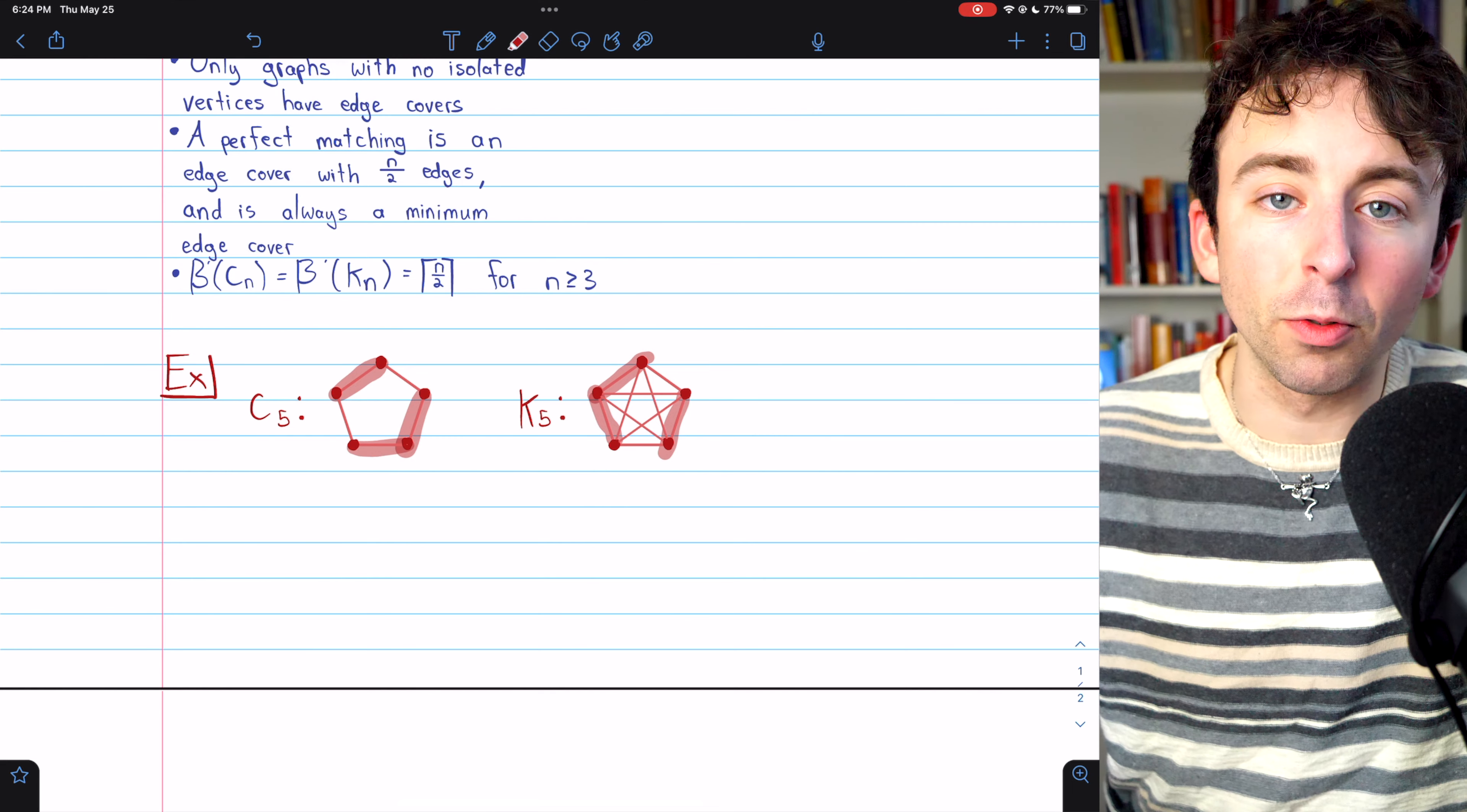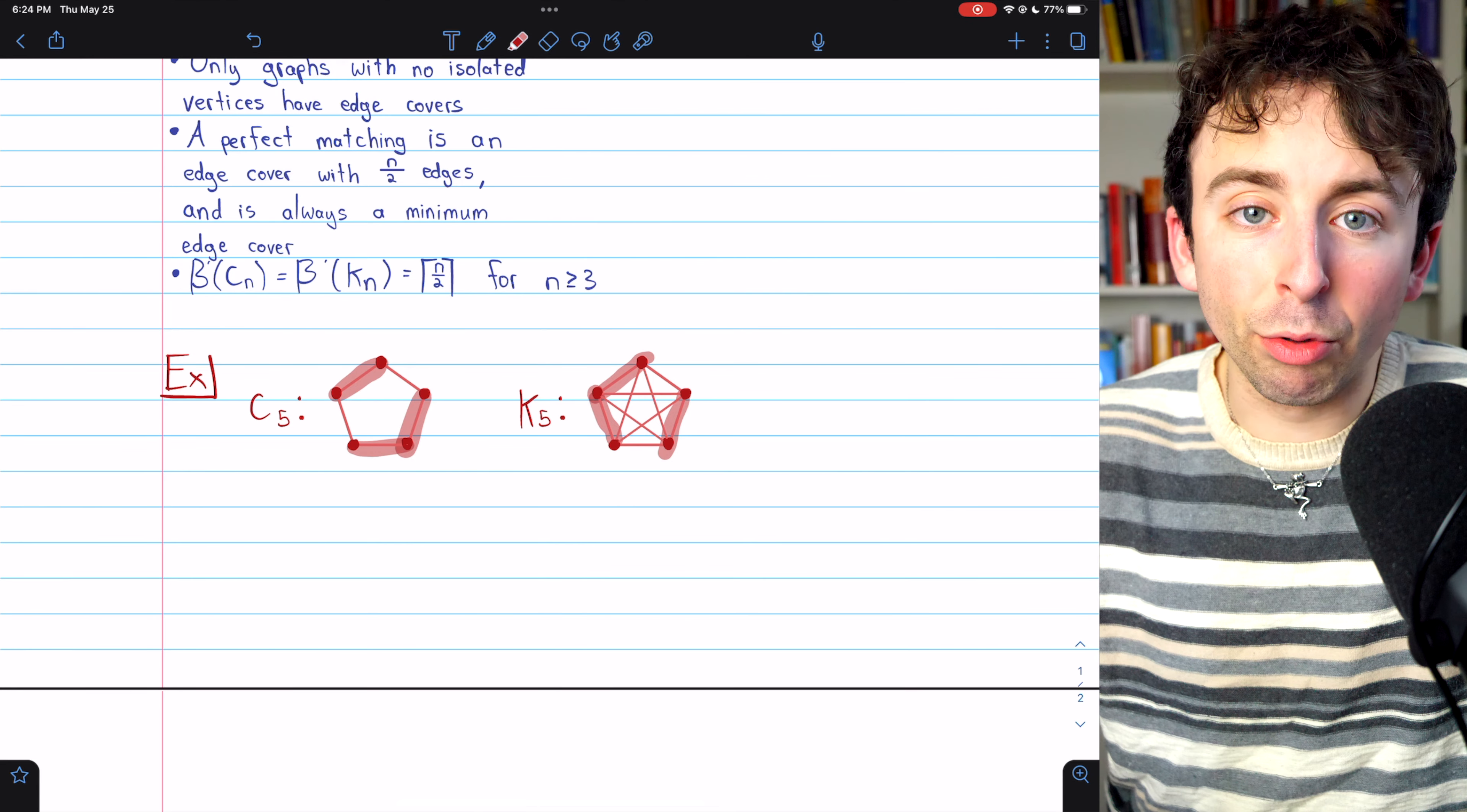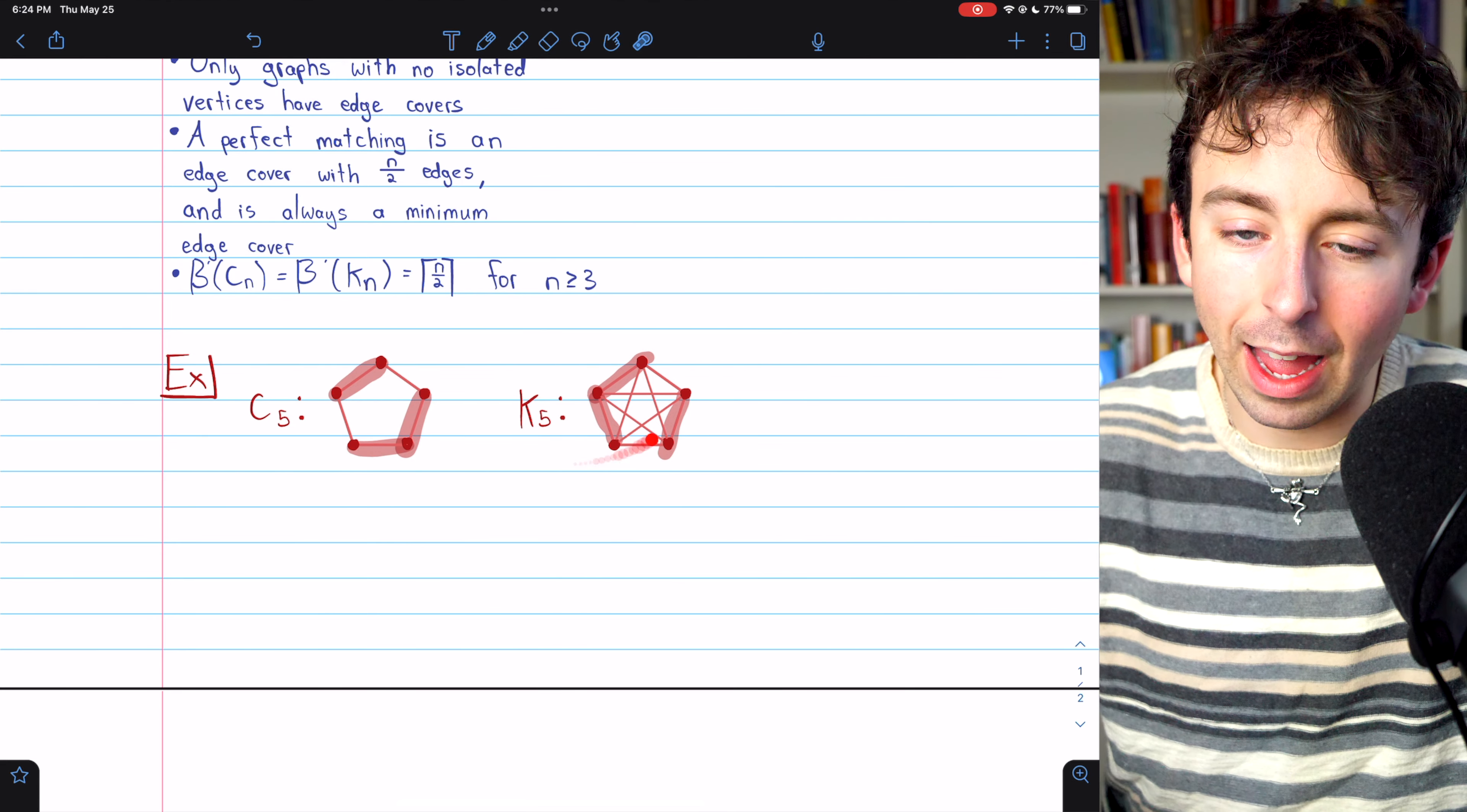this edge, and one more to get that fifth vertex. Maybe we take this edge here, doesn't really matter. But again, it takes three edges to cover this graph, K5.